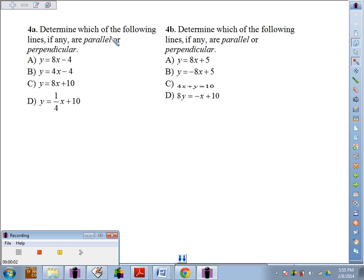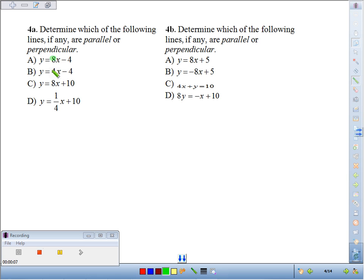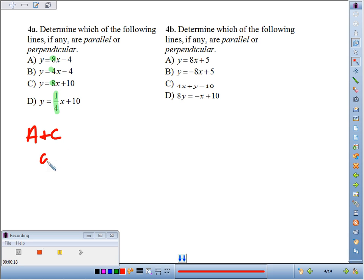Number four: determine which of the following lines, if any, are parallel or perpendicular. Well, compare the slopes. I can do that because all of the equations were solved for y. Now 8 and 8 are the same, and if two lines have the same slopes then they're parallel. So I'd say A and C are going to be parallel.